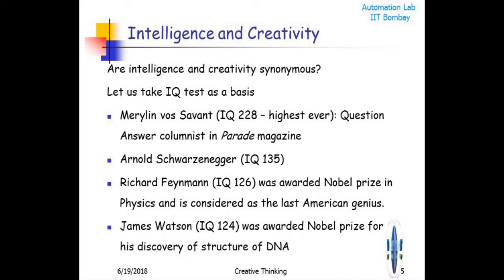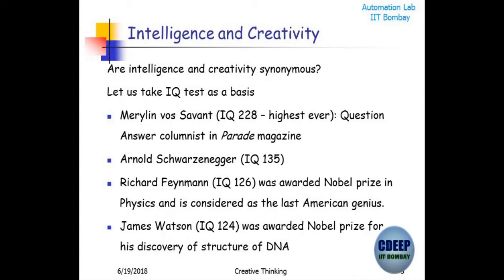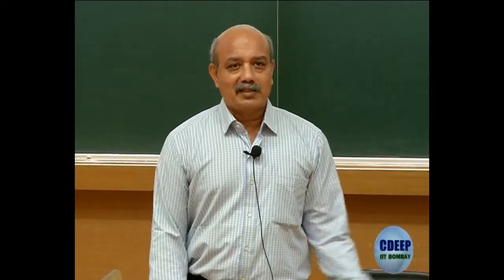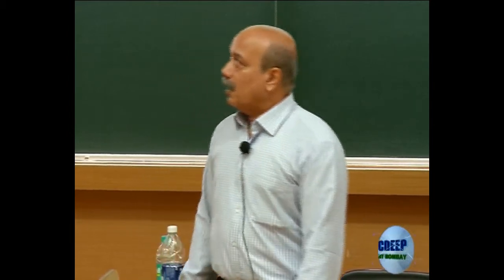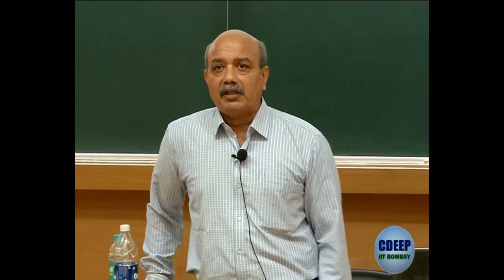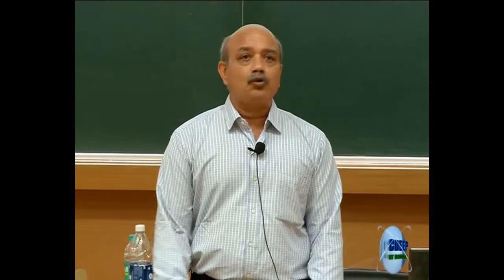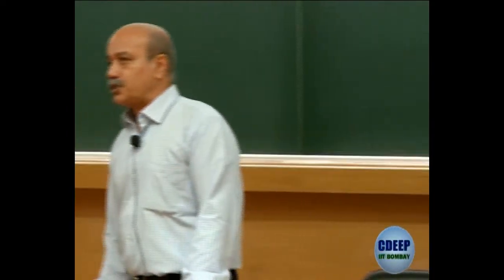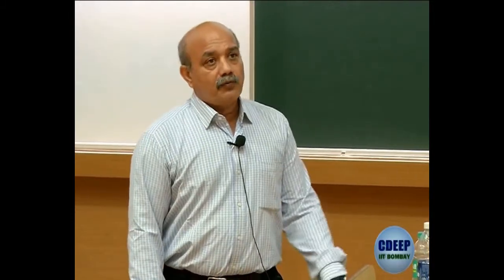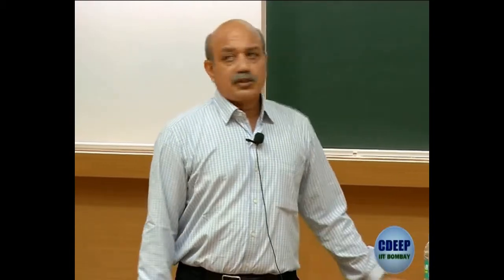There is a big difference between being an intelligent person and being a creative person. How do you measure intelligence? The accepted method is IQ. Let us look at some IQs of people who were big scientists and people who had very high IQ, and then see whether we can draw some conclusions from that. This lady Marilyn Savant had the highest IQ ever recorded - 228. According to the IQ test, she is probably the most intelligent person.